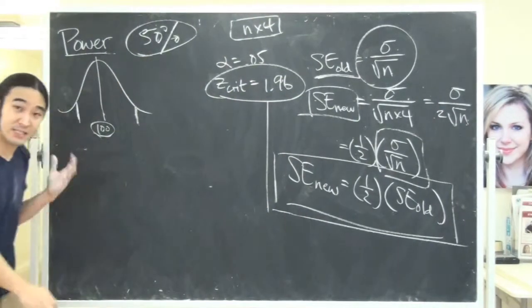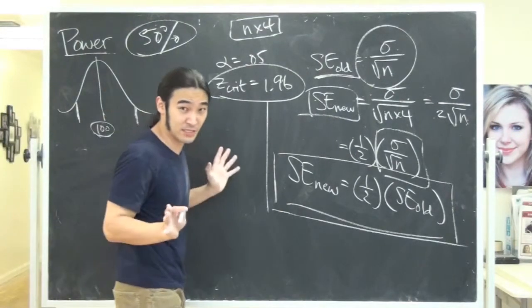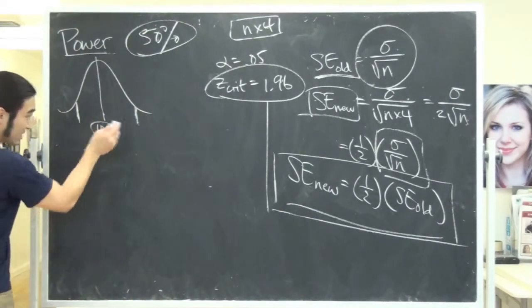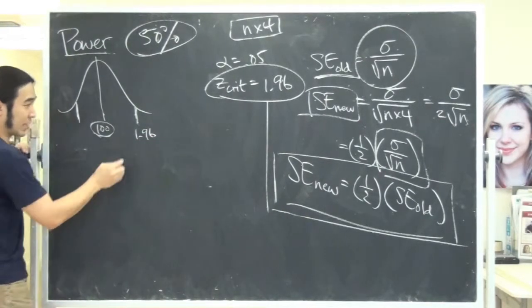By the way, I have a tendency of saying T. For this example, everything should be Z. Okay? So, this is Z crit. And it's 1.96. Okay?